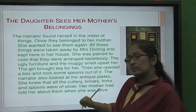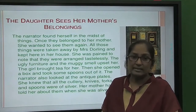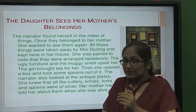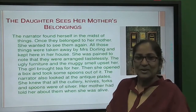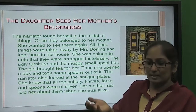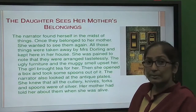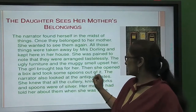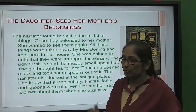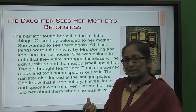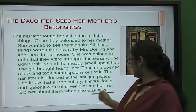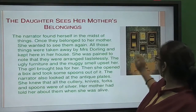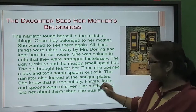The girl brought tea for the narrator. When the tea came in the cup, the narrator noticed the teapods and cups, which had also belonged to her mother. She opened a box looking for spoons, then opened a drawer, but found no spoon. The narrator also looked at the antique plates and examined things around her.